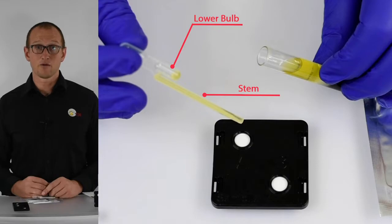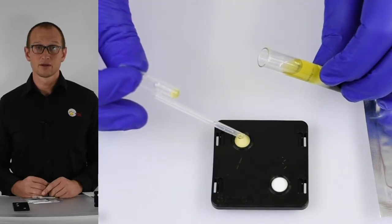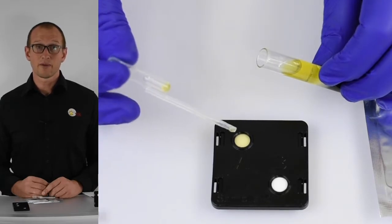Then position the pipette tip over well A and compress the top bulb until the serum is expressed. It's normal for serum to remain in the lower bulb.